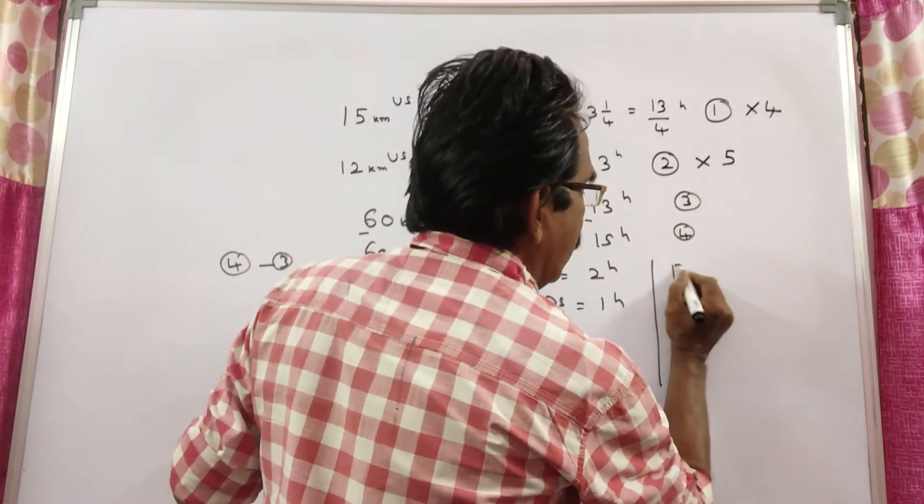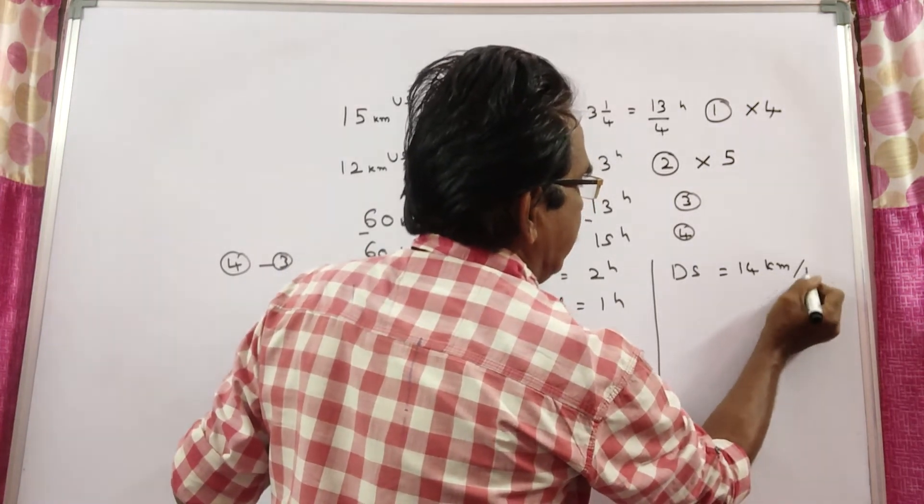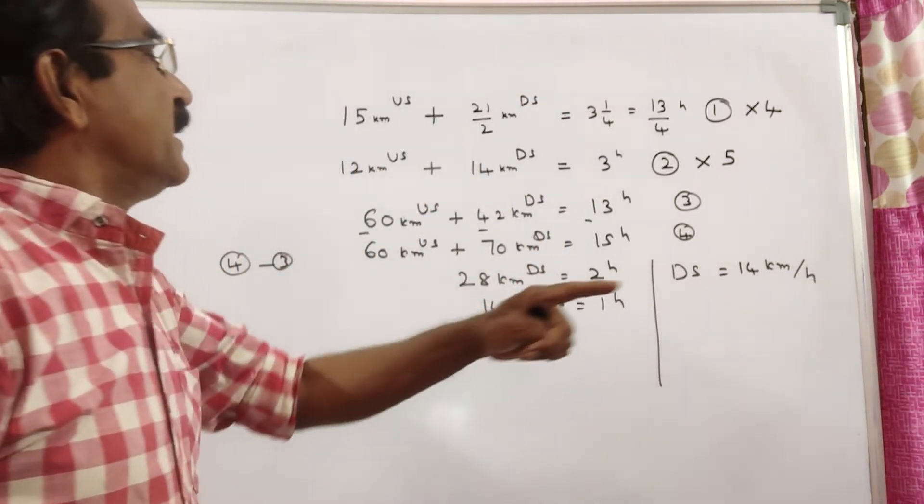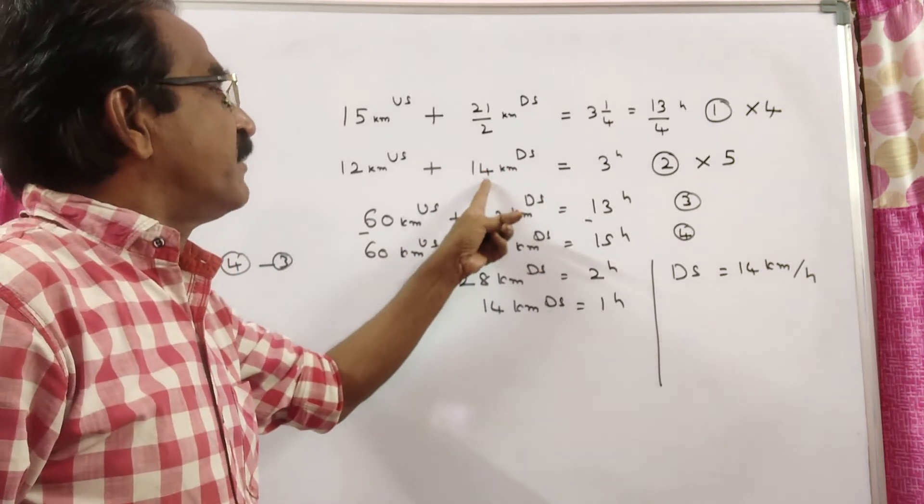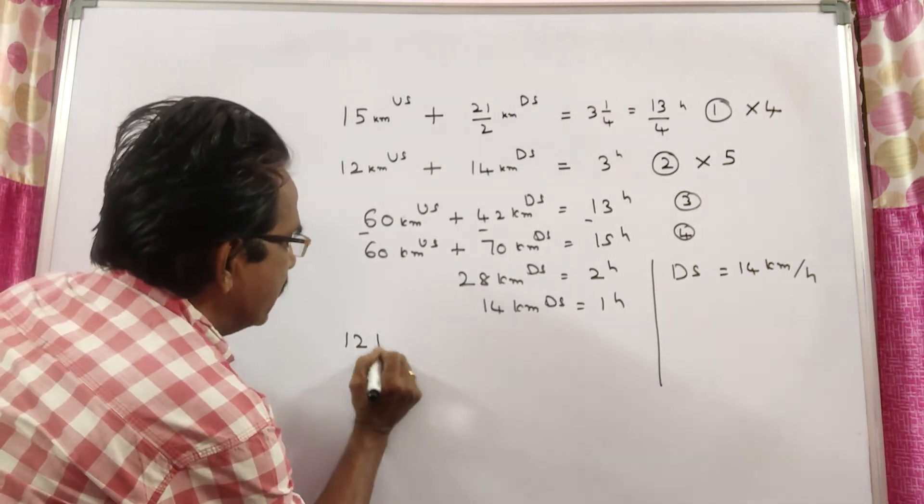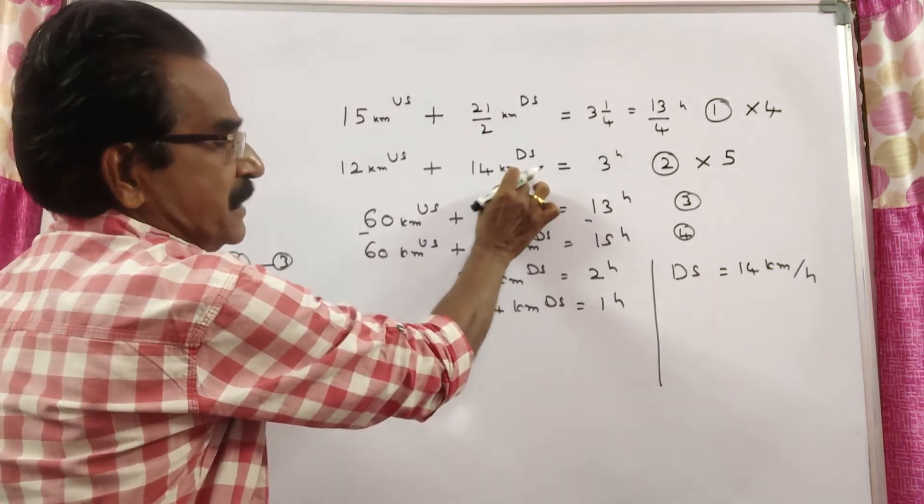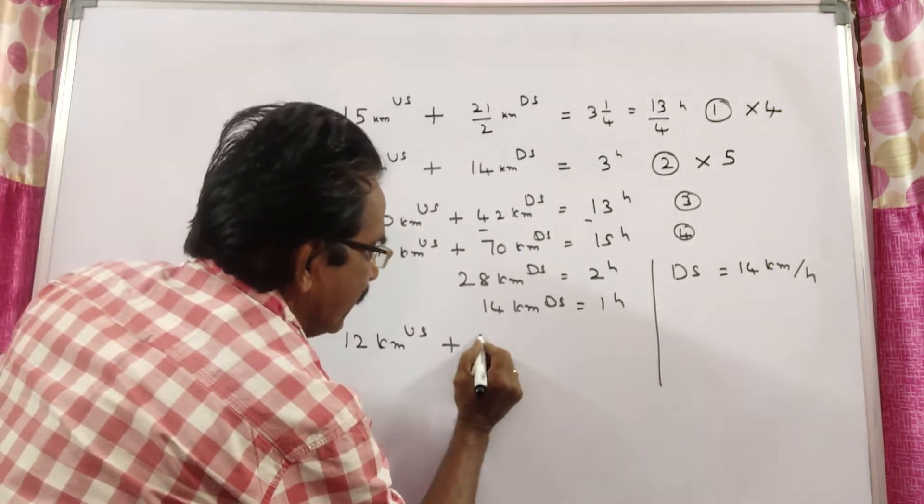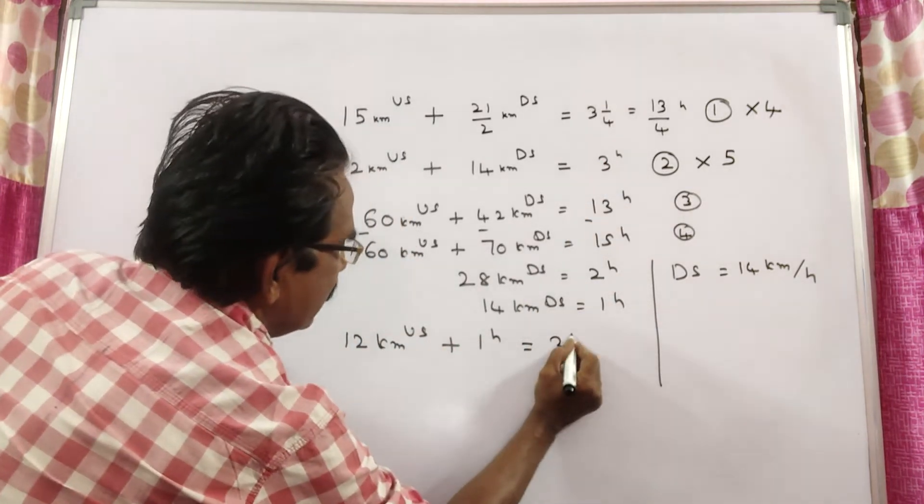That means downstream velocity is 14 kilometers per hour. Now, let us substitute this 14 kilometers downstream in equation 2. 12 kilometers upstream plus 14 kilometers downstream means 1 hour is equal to 3 hours, 2 hours.